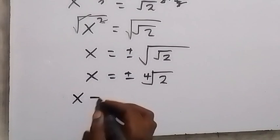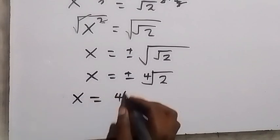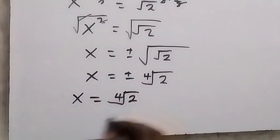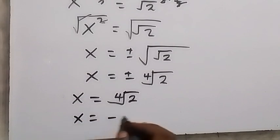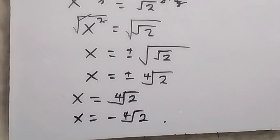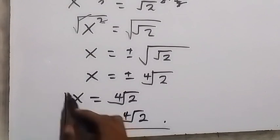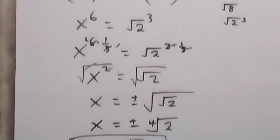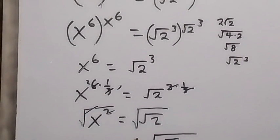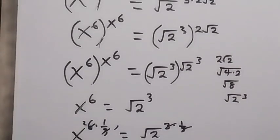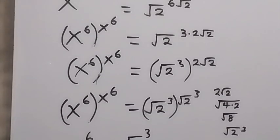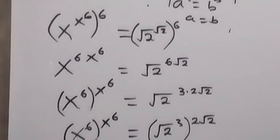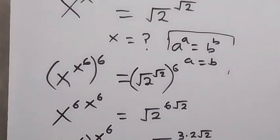So we have two possible cases: x equals the fourth root of 2, or x equals minus the fourth root of 2. These are the two values of x. Thank you for watching — please share this video and subscribe to my channel so you don't miss my videos. See you in the next class, bye for now.